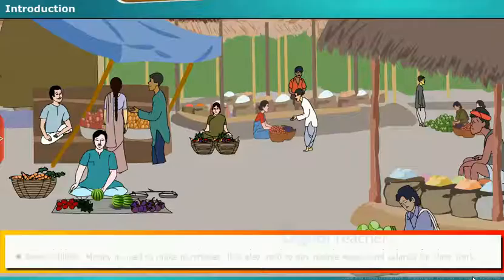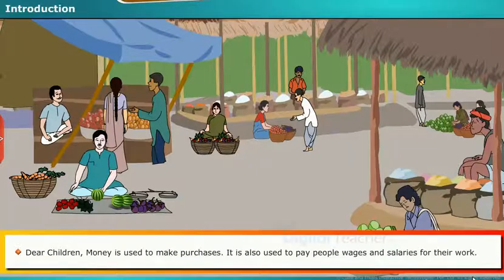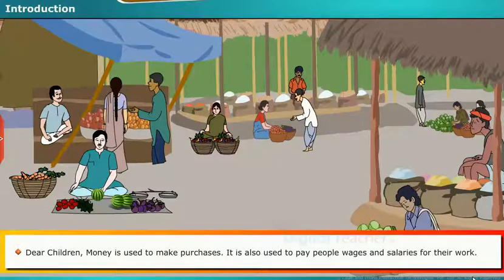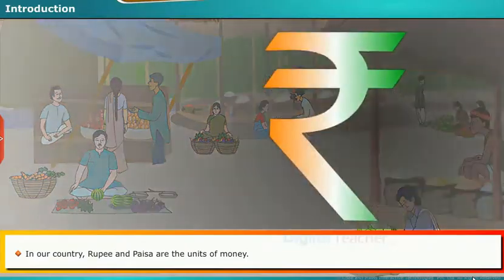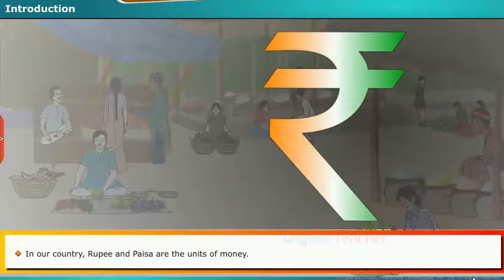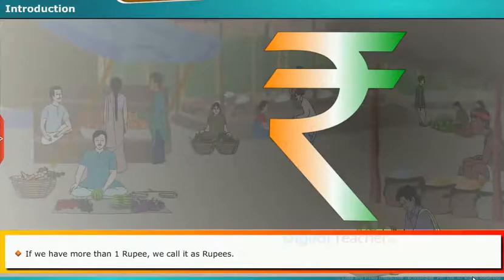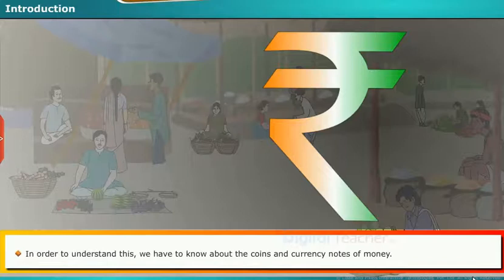Introduction: Dear children, money is used to make purchases. It is also used to pay people wages and salaries for their work. In our country, rupee and paisa are the units of money. If we have more than one rupee, we call it rupees. In order to understand this, we have to know about the coins and currency notes of money.